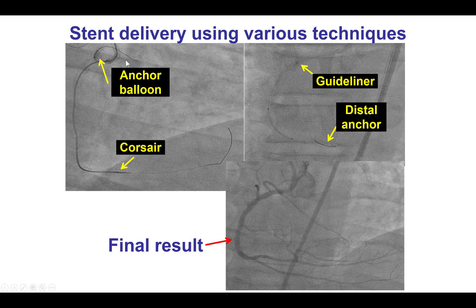In another example where delivery was very challenging, we used an anchor balloon — specifically a side branch anchor. We used a microcatheter to exchange the wire for a stiff Iron Man guide wire (the Mailman or Grand Slam can also be used), and then also used a guide catheter extension — a GuideLiner — and eventually a distal anchoring technique to get the stents down. Having various techniques for extra support can be very useful for achieving a good final result.